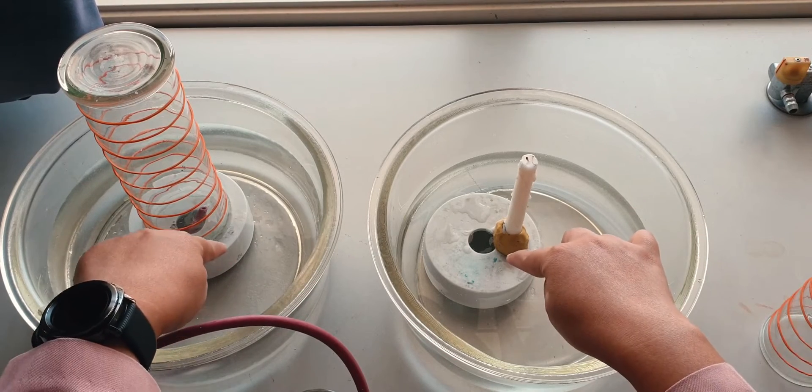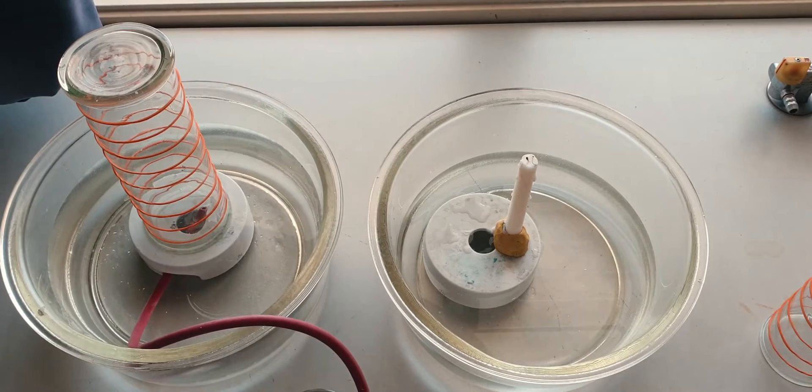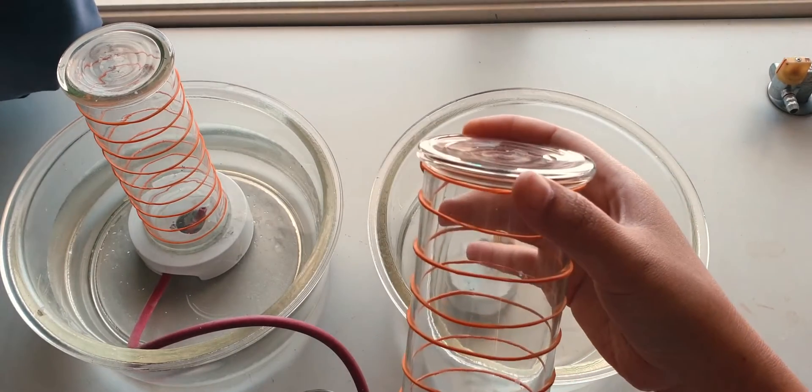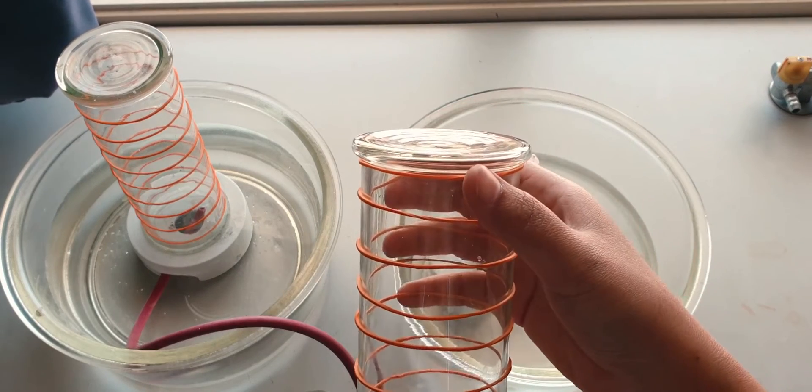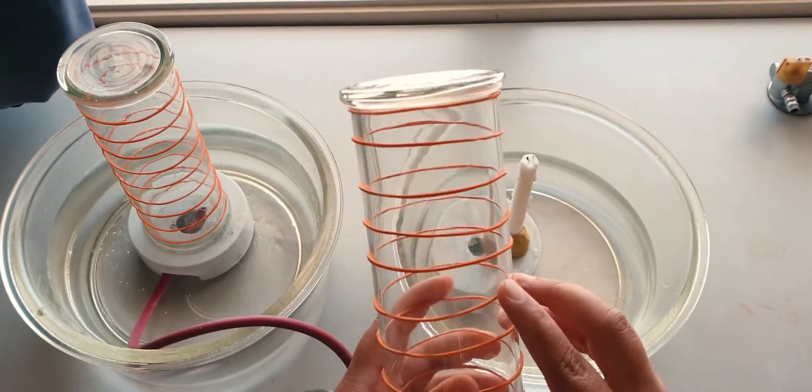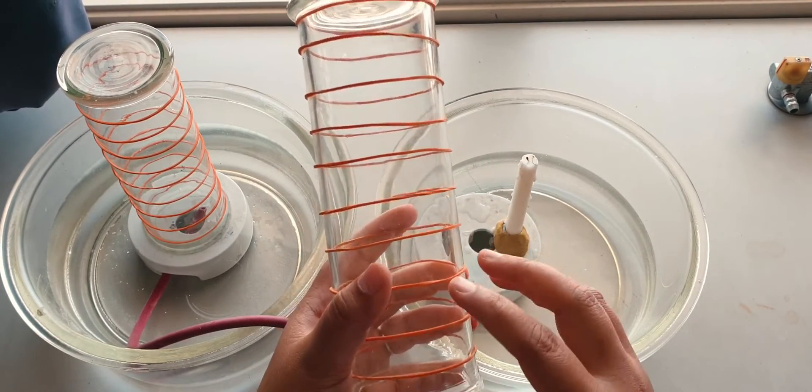And some tubes, rubber tube, and the candle stand over there. I have two candle stands there. What you need to do first is to divide the gas jar into 10 equal parts. I use rubber bands to divide the gas jar into 10 equal parts: one, two, three, four, five, six, seven, eight, nine, ten.